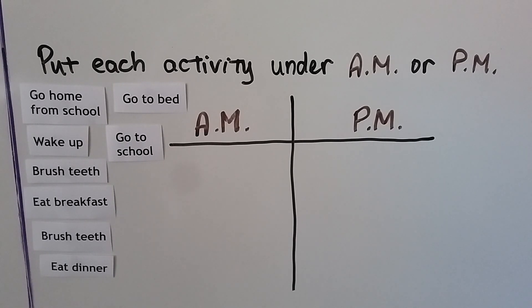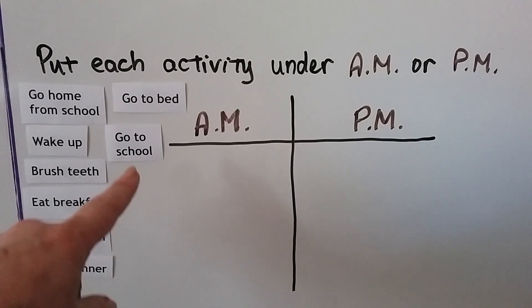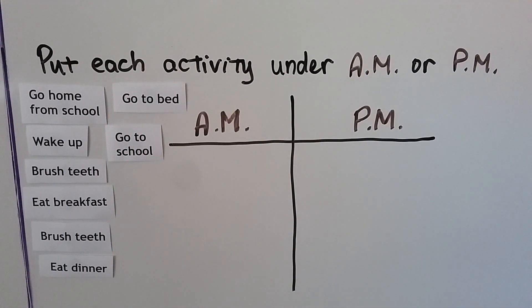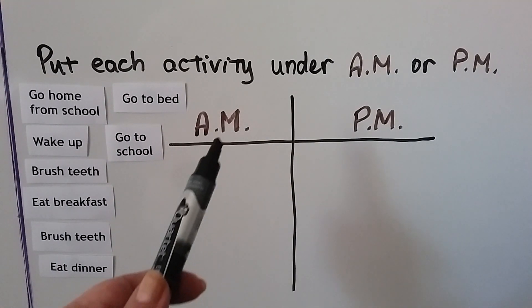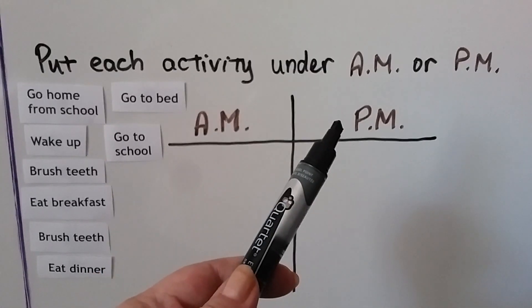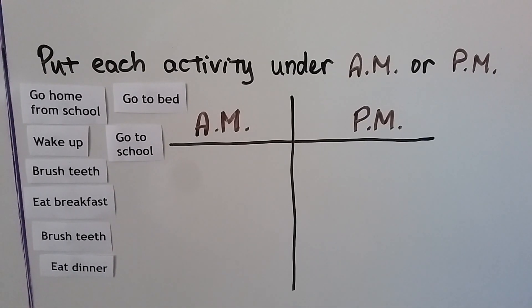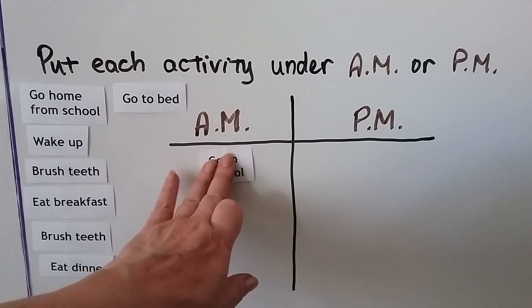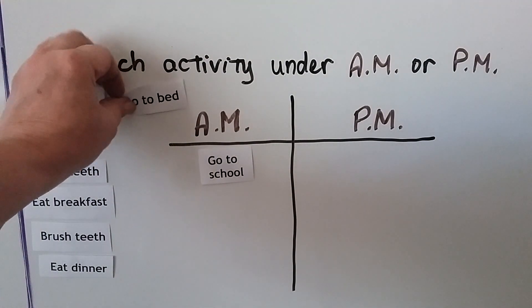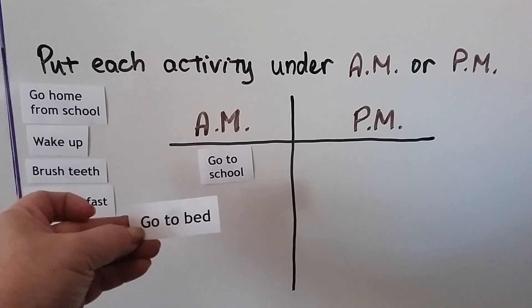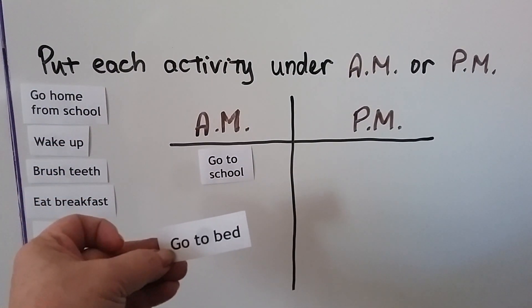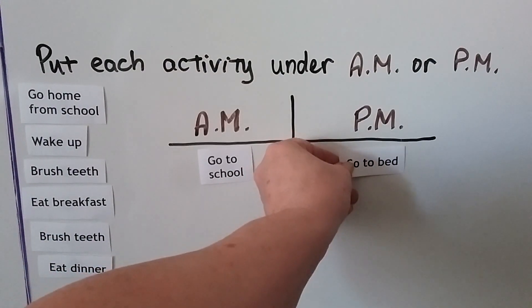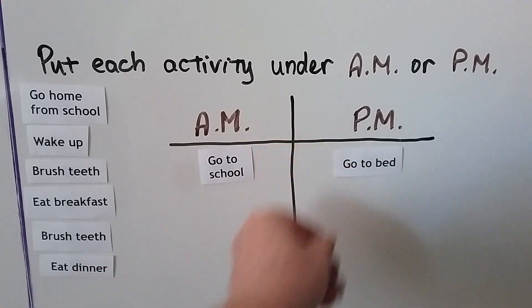We can sort these activities and put them under A.M. or P.M. What about going to school? A.M. is like early morning and P.M. is after lunch. If you said A.M., you're right! What about going to bed — would we go to bed in the A.M. or P.M.? If you said P.M., you're right, because we go to bed at night.